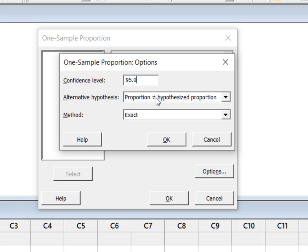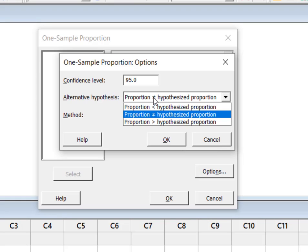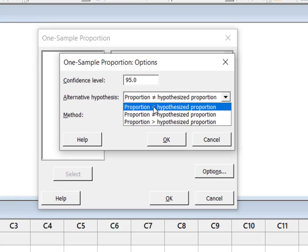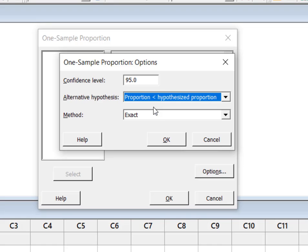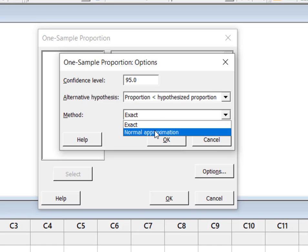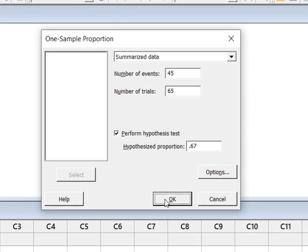Now we have to select the sign for our alternative hypothesis, and that was a less than sign. For our method, we're going to use normal approximation. I'm going to hit OK and OK.